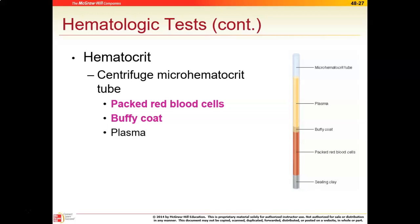This shows the micro hematocrit tube more closely. After centrifugation, you have your packed red blood cells at the bottom, then the buffy coat right in the middle — which is generally a mixture of platelets and white blood cells — and then plasma on top. This is what happens after you put whole blood in one of these tubes and centrifuge it for five minutes. We also have to put a little bit of sealing clay at the end; if we don't, the blood sample will spin out and get all over the centrifuge machine.